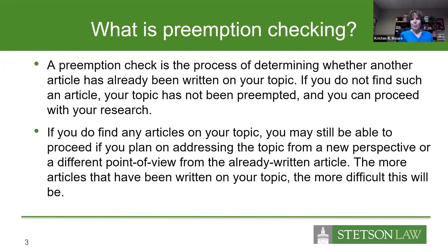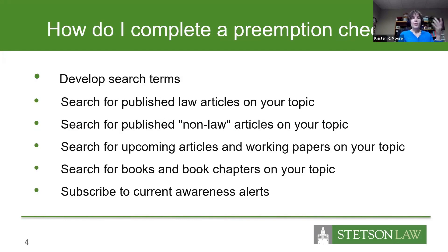You also want to make sure you do some preemption checking before you start writing. A preemption check is just to determine whether or not there is already an article written on your topic. If there is, it's not necessarily the end of the world — you can always take a different point of view, argue it from a new perspective, something like that, just to differentiate yourself from what has already been written. To complete a preemption check, the first thing you want to do is develop your terms. Then you want to search for published law articles on your topic, but also published non-law articles depending on your subject matter. You also want to search for upcoming articles or working papers, books and book chapters, and subscribe to current awareness alerts to keep an eye on things that might be coming out on your topic.